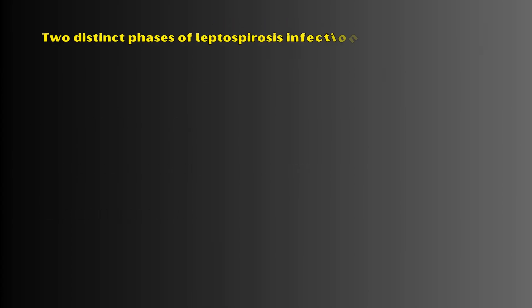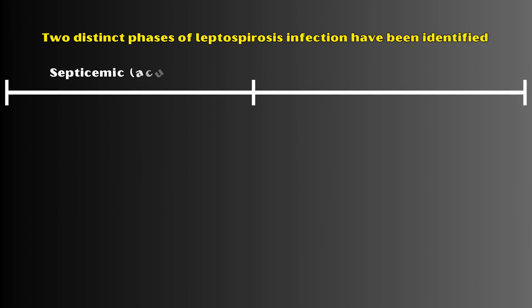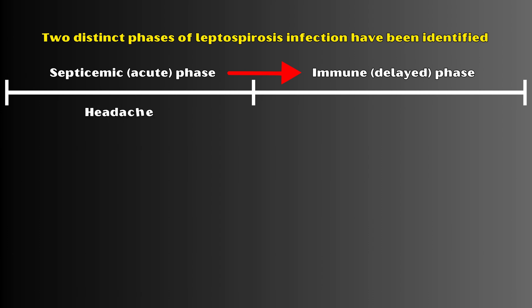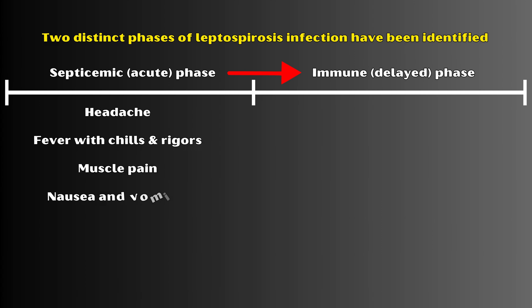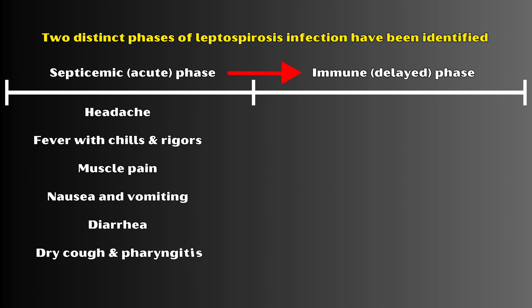Two distinct phases of leptospirosis infection have been identified: the septicemic or acute phase, and the immune or delayed phase. During the acute phase, the patient will have headache, fever with chills and rigors, muscle pain, nausea and vomiting, diarrhea, a dry cough and pharyngitis, and conjunctival suffusion.